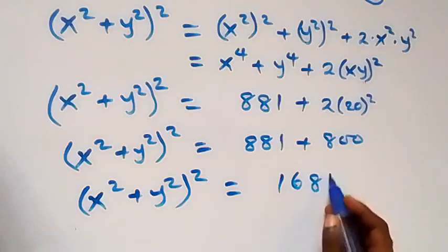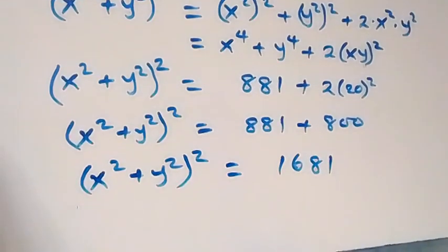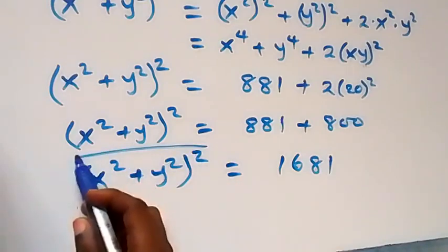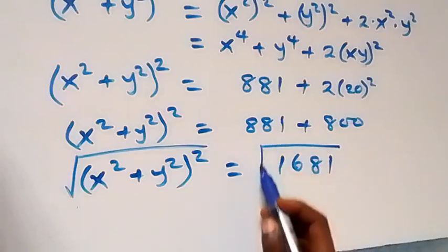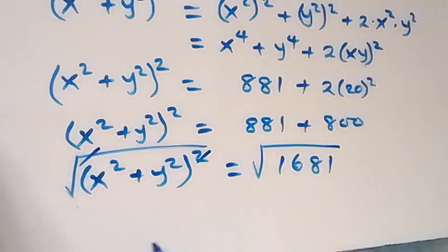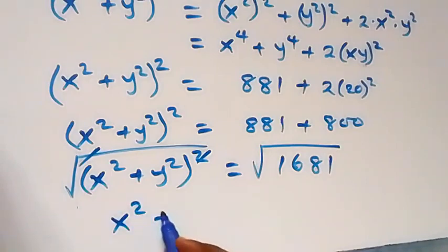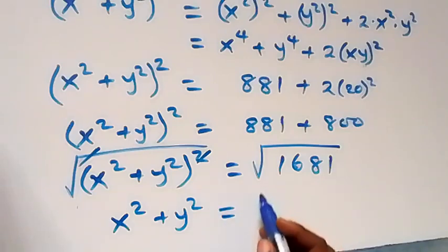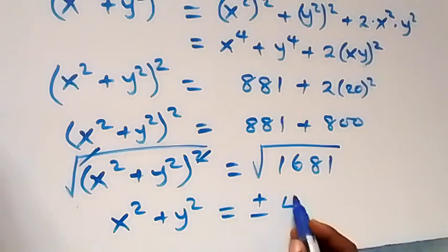This gives us x squared plus y squared, all squared, equals 1681. Taking the square root on both sides, the squares cancel and we have x squared plus y squared equals plus or minus 41.